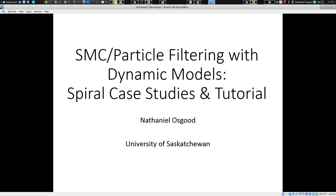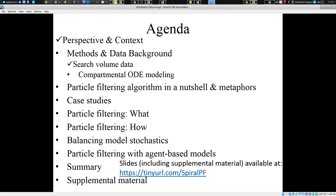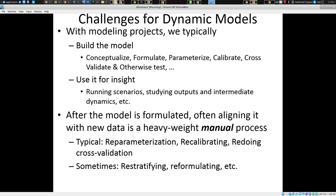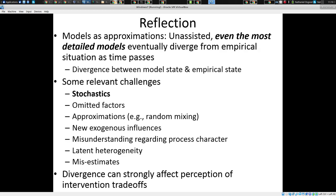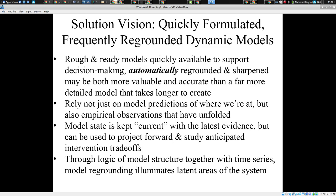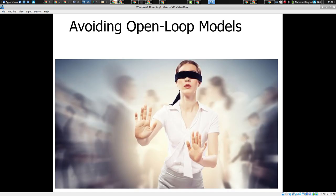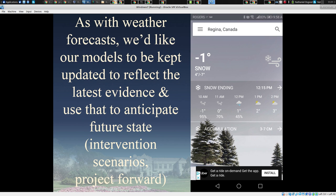I kind of went through the two top levels last time — gave you a sense of motivations, some reflections that are almost philosophical about modeling and how modeling diverges from the world. We want models that are quickly formulated and frequently regrounded to guide our understanding. We want to avoid blindfolded models — models bound only to the assumptions as we knew them at the time we created them. We want models that adapt over time. I gave the analogy of weather prediction apps.